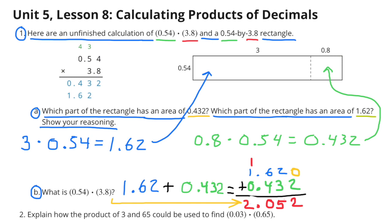Which part of the rectangle has an area of 432 thousandths? Which part of the rectangle has an area of 1 and 62 hundredths? Show your reasoning. 3 times 54 hundredths equals 1 and 62 hundredths, so that would be the 3 by 54 hundredths section of the rectangle. And 8 tenths times 54 hundredths equals 432 thousandths, so that would be represented by the 54 hundredths by 8 tenths section of the rectangle.